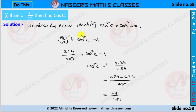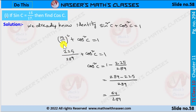We already know the identity sin²c plus cos²c is equal to 1. Now we substitute sin c equals 15 by 17, written as 15 by 17 whole square plus cos²c is equal to 1. 15 square is 225 and 17 square is 289.